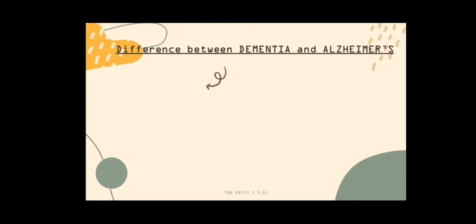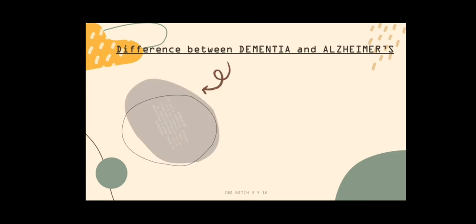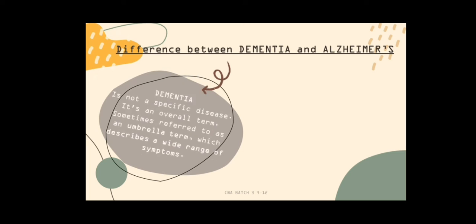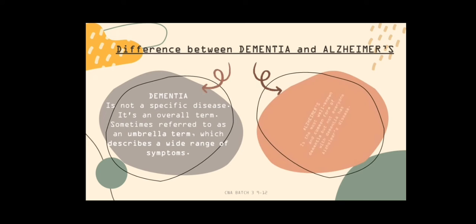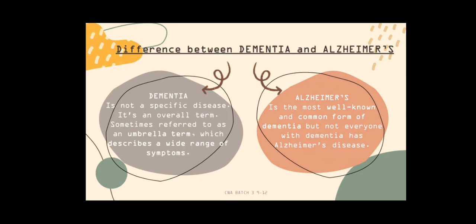Difference between dementia and Alzheimer's. Dementia is not a specific disease. It is an overall term, sometimes referred to as the umbrella term, which describes a wide range of symptoms. Alzheimer's is the most well-known and common form of dementia, but not everyone with dementia has Alzheimer's disease.